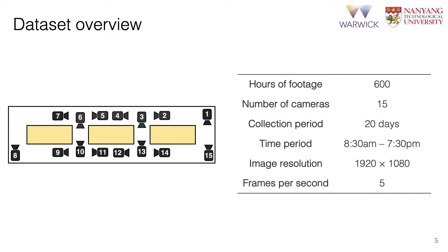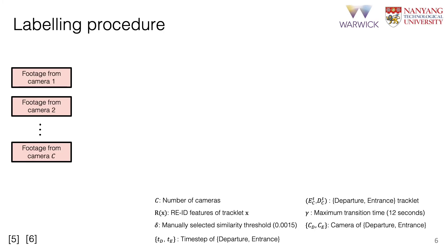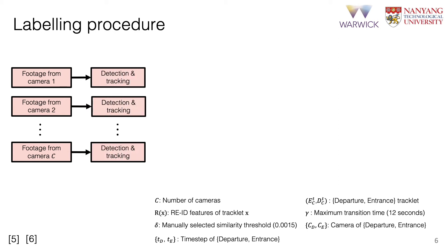Annotating data suitable for MCTF is a laborious task. We must first annotate each object trajectory in each camera view and then associate these trajectories across camera views. Fully manual annotation of a dataset at such scale is infeasible, so we take a semi-supervised approach. Given footage from C cameras, we run pedestrian detection and tracking algorithms, resulting in tracks for each camera view. We use the Mask R-CNN detection and DeepSORT tracking algorithm.